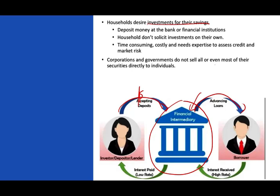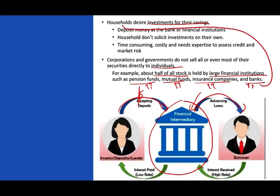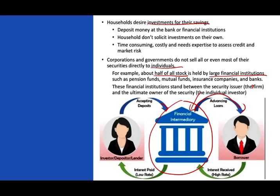About half of all stocks are held by large institutions such as pension funds, mutual funds, insurance companies, and banks. Where do these institutions get their money? From households. So securities are ultimately sold to households, but through intermediaries. That's why financial intermediaries are critical to our economy — they play that intermediary role between households and corporations and government. These financial institutions stand between the security issuer and the ultimate owners, who are household investors.